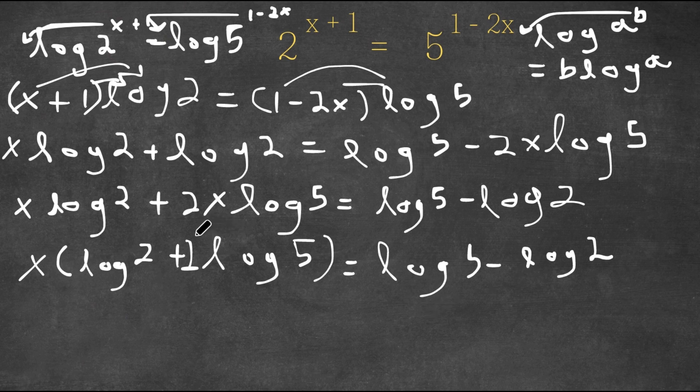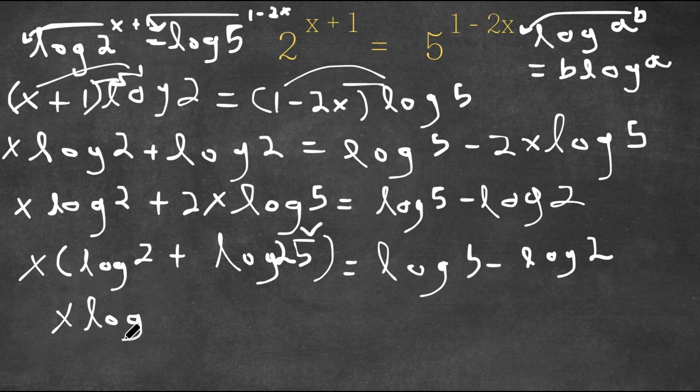And remember, I can actually move this 2 to the front of the logarithm. So this would actually be log 5 squared, which is equal to log 25. And when we're adding logarithms, we actually multiply the two terms. So we multiply 2 with 25. So 2 times 25 is 50. So this would be x times log 50.